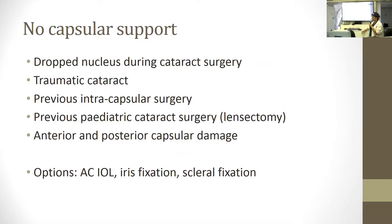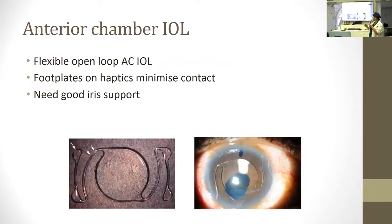What about when you have no capsular support? This applies to cases where the nucleus has been dropped, very traumatic cataract, previous intracapsular cataract surgery, lensectomy from pediatric cataract surgery, or very significant anterior and posterior capsular damage. The options here are an anterior chamber lens implant, iris fixation, or scleral fixation. I have a whole separate talk on this, so I'll just run through the options briefly and show videos in a second talk.